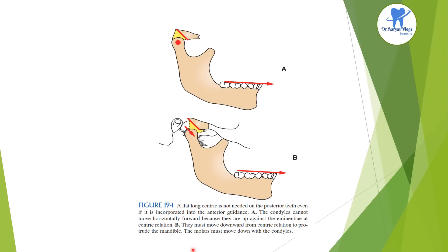This picture shows that flat long centric is not needed on the posterior teeth, even if it is incorporated into the anterior guidance. Here, the condyles cannot move horizontally forward because they are up against the eminence at centric relation. This picture shows they must move downward from centric relation to protrude the mandible, and the molars must move down with the condyles.